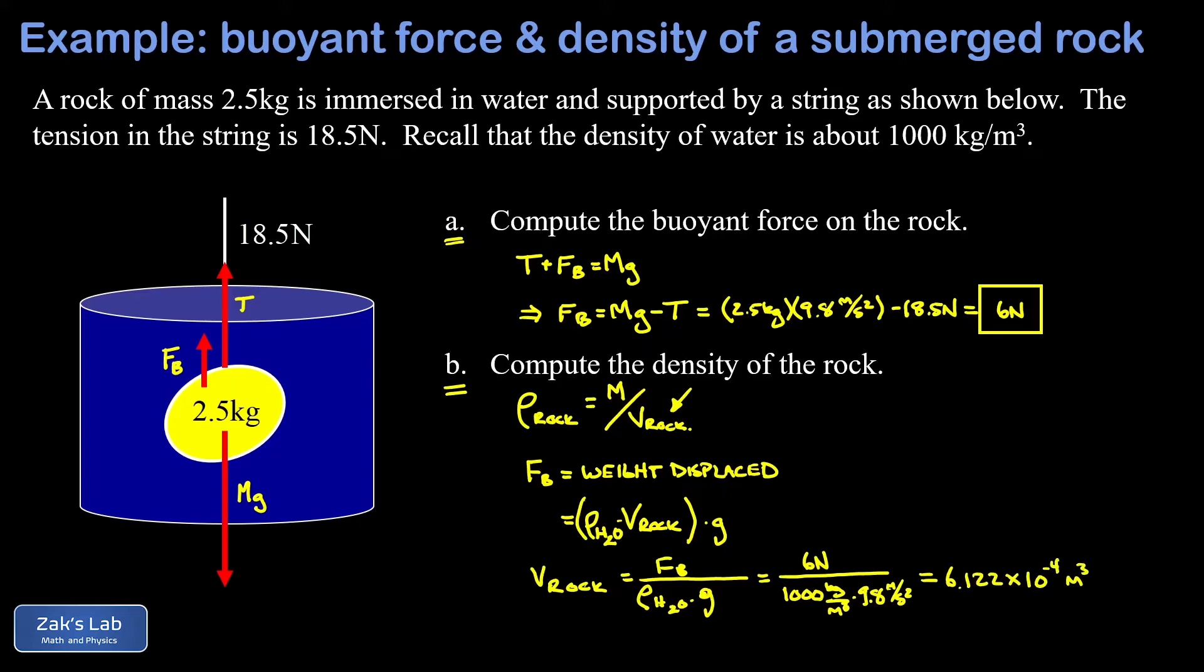I had a lot of students who thought this number just seemed too small, but keep in mind a cubic meter is a block one meter on a side, and a typical little river cobble is very small in comparison to a cubic meter. Now we can finally finish our calculation: the density of the rock should be the mass of the rock (2.5 kilograms) divided by the volume of the rock, which is this relatively small number.